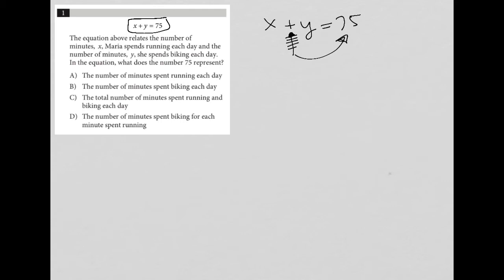So answer choice A says the number of minutes spent running each day. Well, that can't be it because we know that X alone represents running. So it can't be that X plus Y or that the number 75 represents the number of minutes spent running.